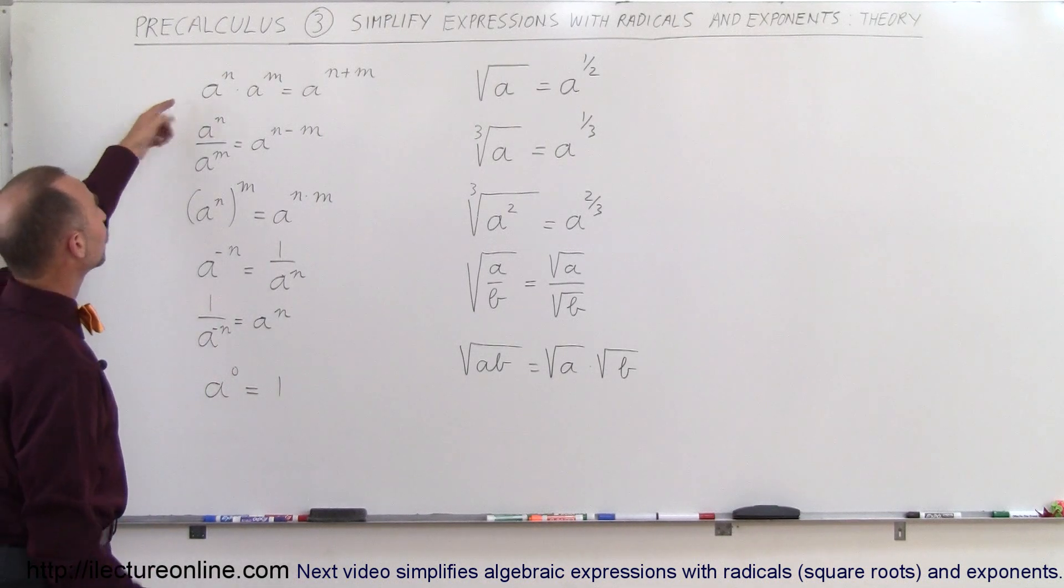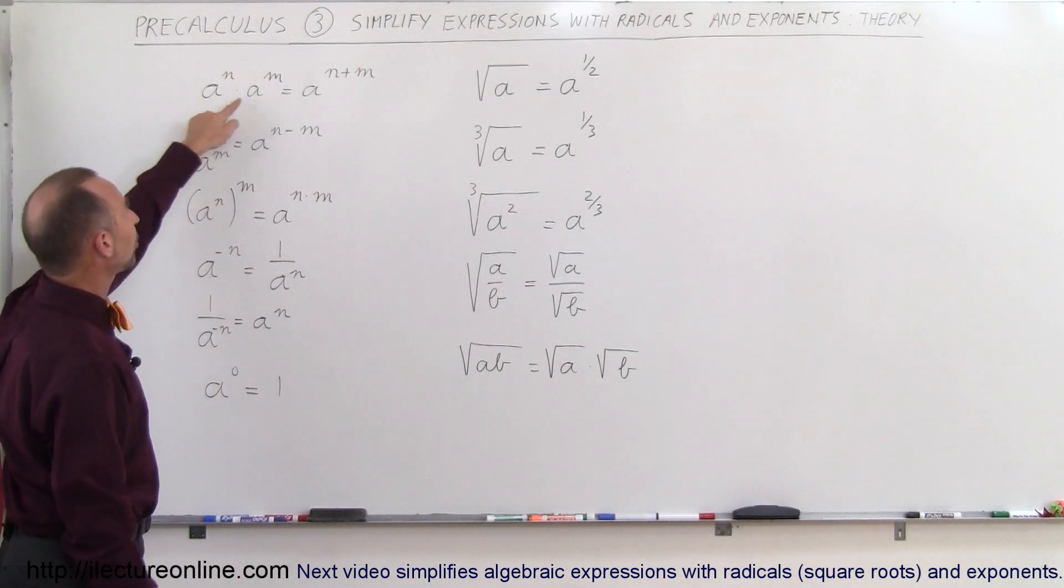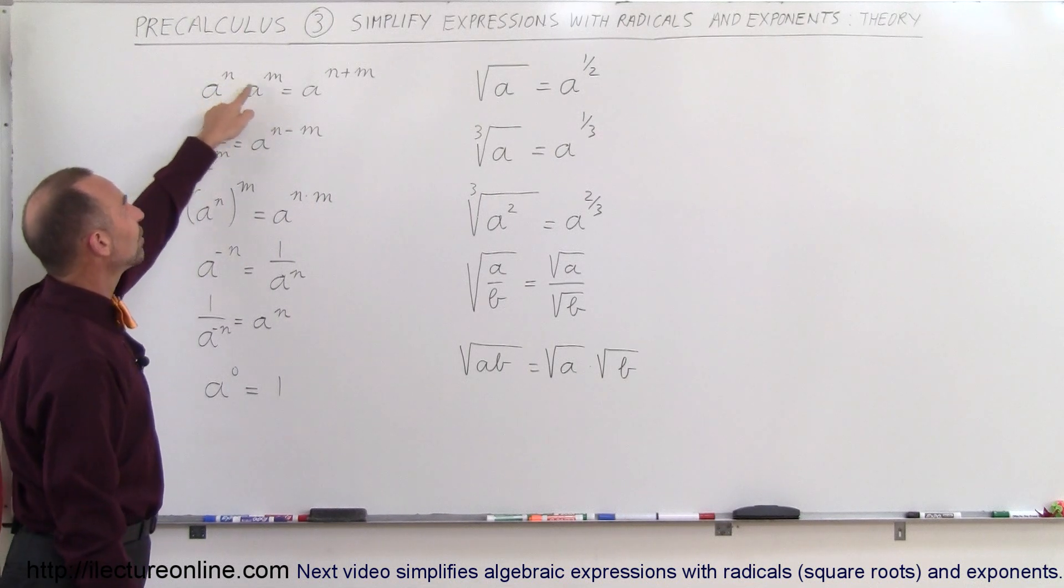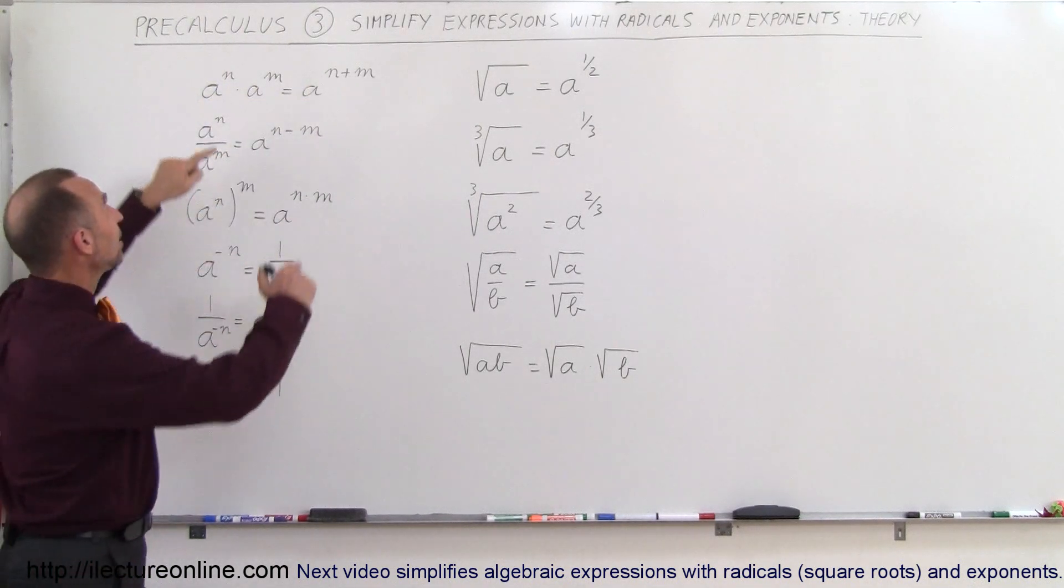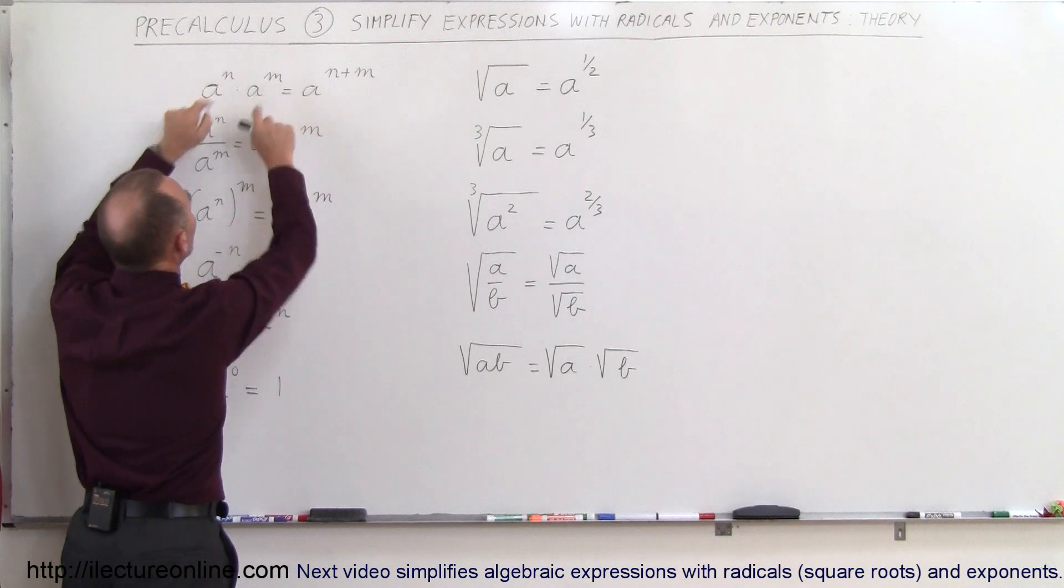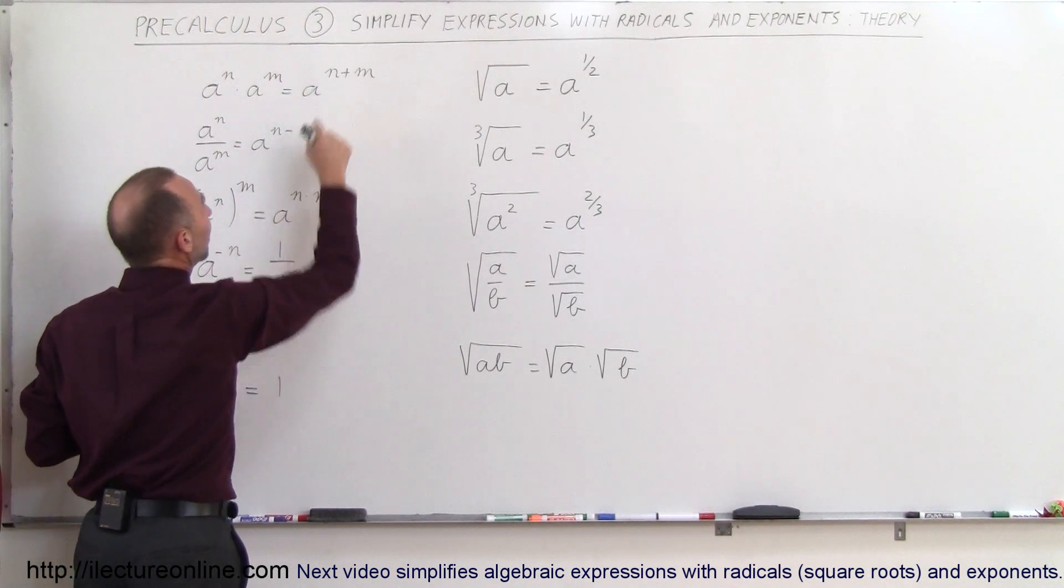Whenever we have two numbers that we're multiplying together, and the bases are the same, then we simply add the exponents. So A is considered the base, and N and M are the exponents, so this would be A to the N plus M.